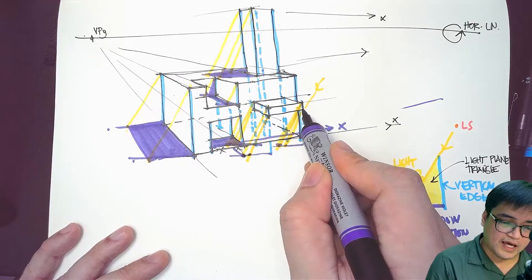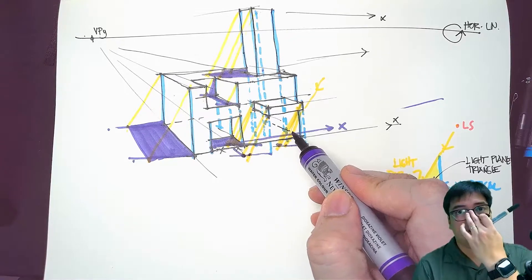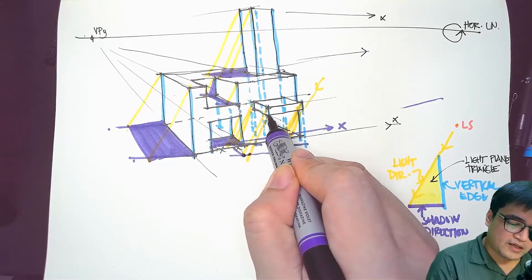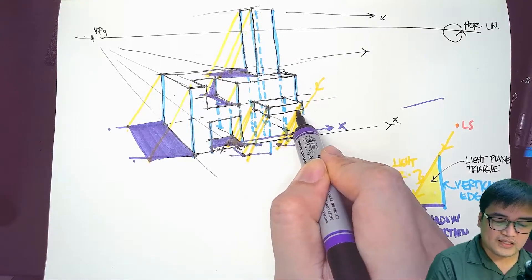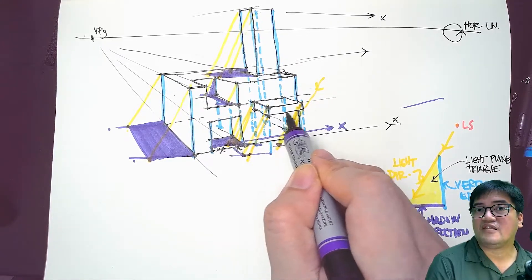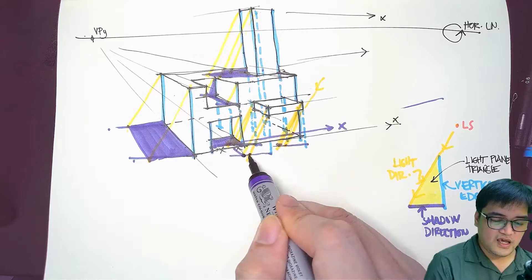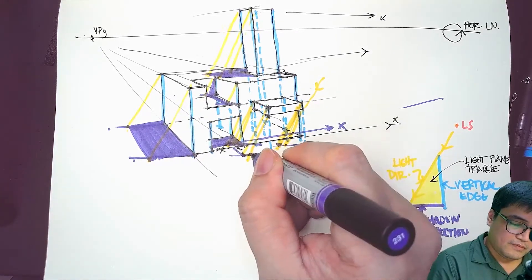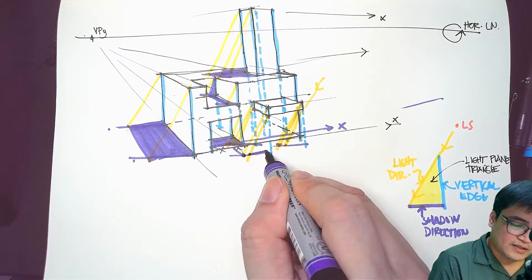On the lower casting of these vertical line shadows, we can determine the shadow casting of this edge underneath this cantilever onto here, onto the ground, by connecting these two points.